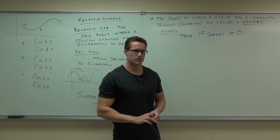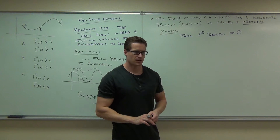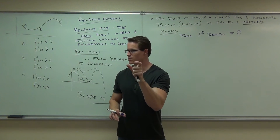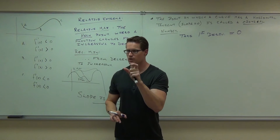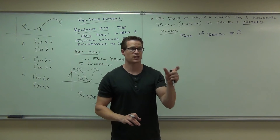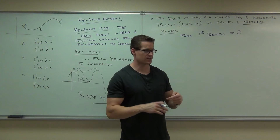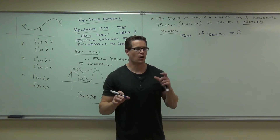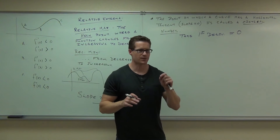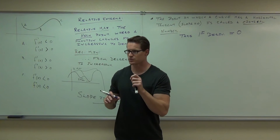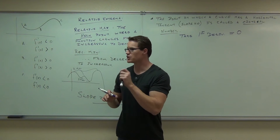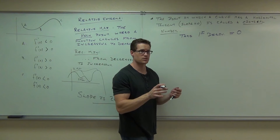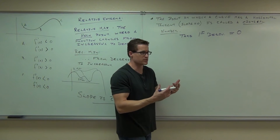One more side note: if you get a fraction, typically all you have to do is set the numerator equal to zero. But for the first and second derivative test — which we'll get to in about a week — you also have to check the points where the denominator equals zero as well. If that gives you undefined points for your slope, you need those. Any undefined points for your slope are important.